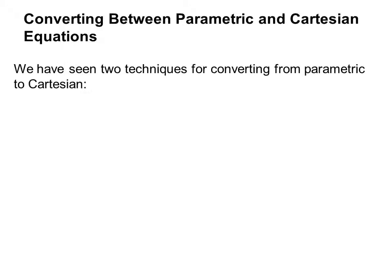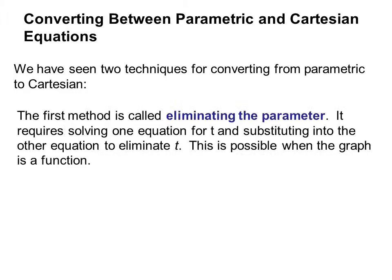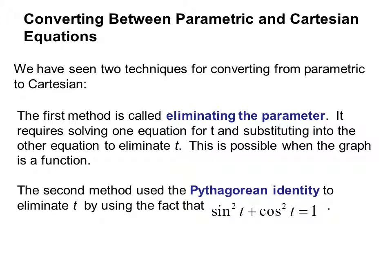Converting between parametric and Cartesian equations. We've seen two techniques for converting from parametric to Cartesian. The first method is called eliminating the parameter. It requires solving one equation for t and substituting into the other equation to eliminate t. This is possible when the graph is a function. The second method used the Pythagorean identity to eliminate t by using the fact that sine squared t plus cosine squared t equals one.